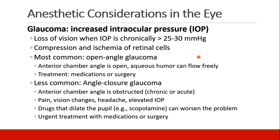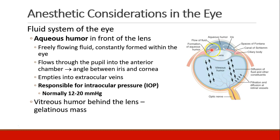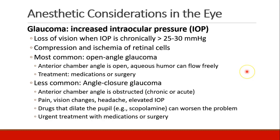Less common is angle closure or closed angle glaucoma. In these patients, the angle is obstructed, either acutely or chronically. These patients will have pain, vision changes, headache, and elevated intraocular pressure. These are the patients where if you dilate their pupil — like with scopolamine — it can worsen the problem. As the iris dilates and thickens, you can precipitate acute angle closure, and they need urgent treatment with medications or surgery.